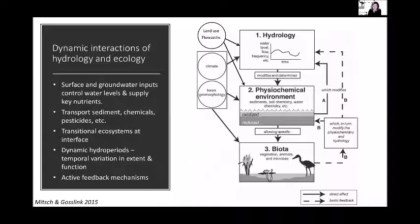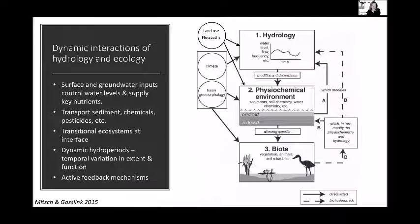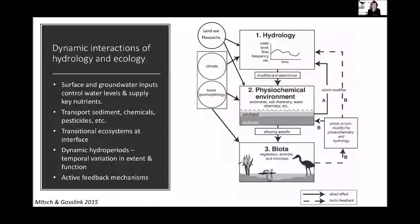I pulled a slide from a class I teach on restoration engineering that helps us understand how wetland ecosystems tier in this connection between a lot of what we talked about yesterday related to hydrology. Things like climate and basin geomorphology are the classic drivers of this physical environment that connects with what the wetland hydrology looks like. Land use — the surrounding land use, but also within the basin — and the flow paths by which that water gets to the wetland itself are really important in terms of how the wetland persists over a season and how inter-annual variability might happen.